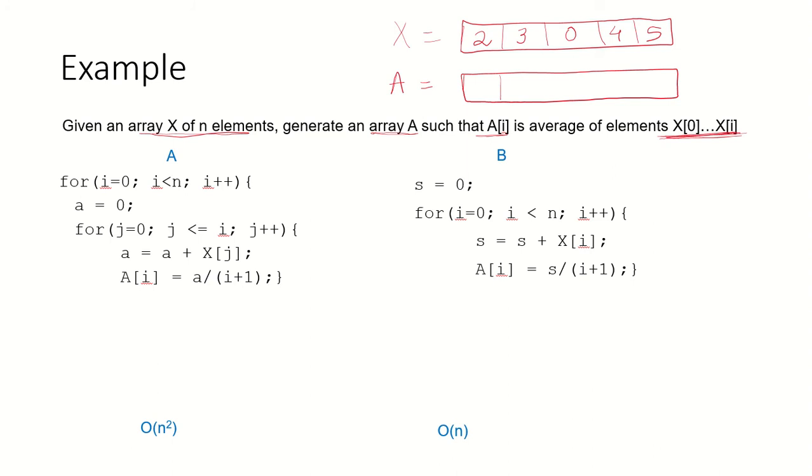If we are computing A[0] it would be the average of X[0] to X[0], that means average of 2 which would be 2. A[1] would be the average of A[0] to A[1], that means it would be 5 by 2.